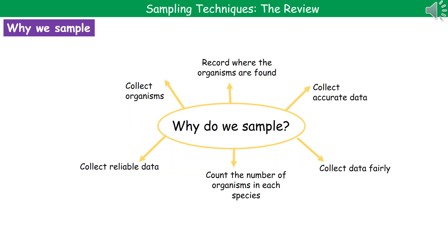The next thing we need to consider is why we carry out this process of sampling, and there are a wide range of different reasons. First of all, it allows us to collect accurate data about where organisms are found and what organisms are present. We might do this by collecting the organisms themselves, or we might just record them in situ. It also allows us to collect data fairly and reliably.